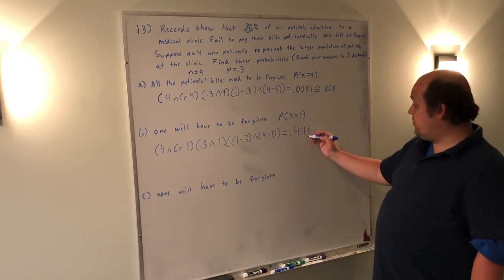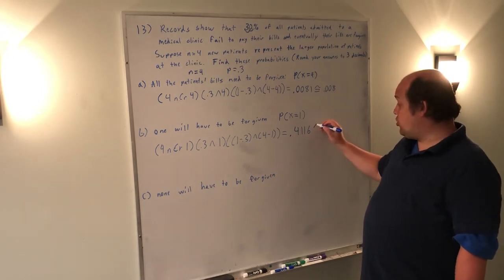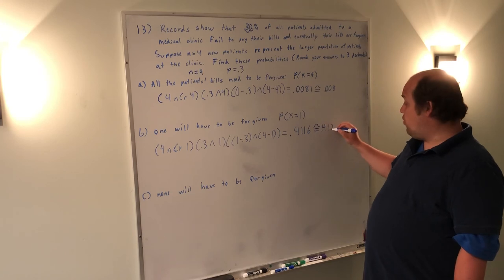Again, round to three decimals, so I'm dropping a 6. Since that 6 is 5 or larger, this becomes 0.412.